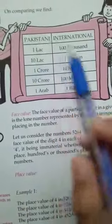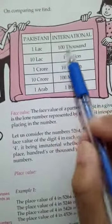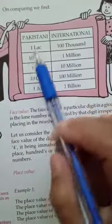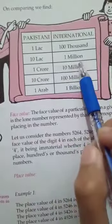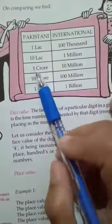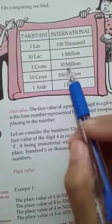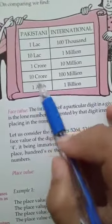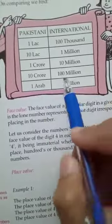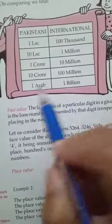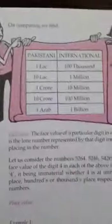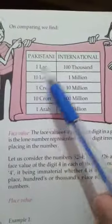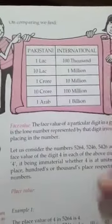You have to remember: one lakh equals one hundred thousand, ten lakhs equals one million, one crore equals ten million, and one billion equals one hundred million. You have to remember these — they will be used in objective questions.